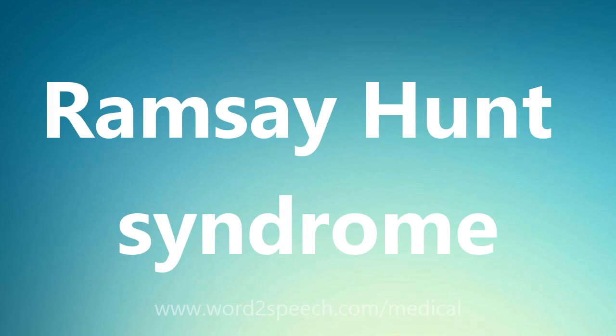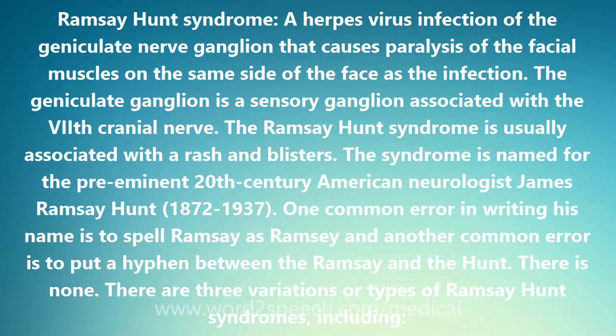Ramsay Hunt syndrome is a herpesvirus infection of the geniculate nerve ganglion that causes paralysis of the facial muscles on the same side of the face as the infection. The geniculate ganglion is a sensory ganglion associated with the 7th cranial nerve. Ramsay Hunt syndrome is usually associated with a rash and blisters.